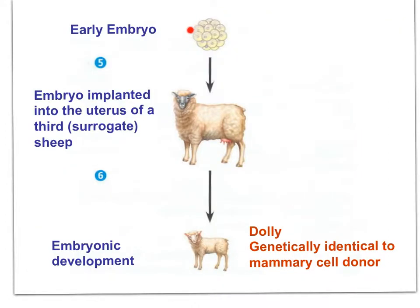The embryo is then implanted into a surrogate mother, not related to either the egg donor or the differentiated cell donor. Months later, the embryo has developed into a clone of the sheep that donated the differentiated mammary cell.